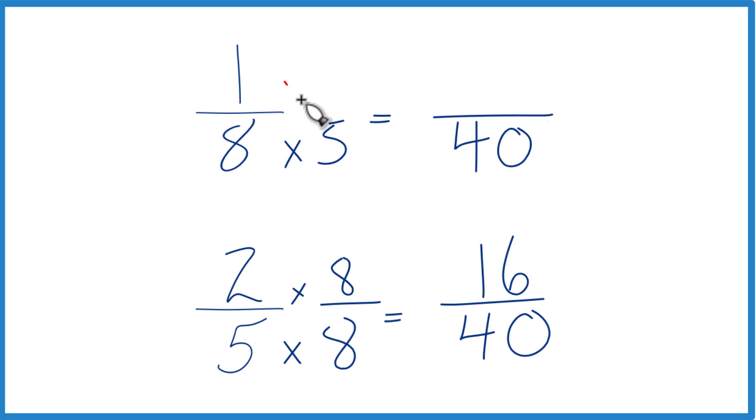Up here, we're going to multiply the numerator times 5. 1 times 5, that's 5. And now we have the same denominator, we just compare the numerators. And you can pretty clearly see 16 is larger than 5. 16/40ths, that's larger than 5/40ths.